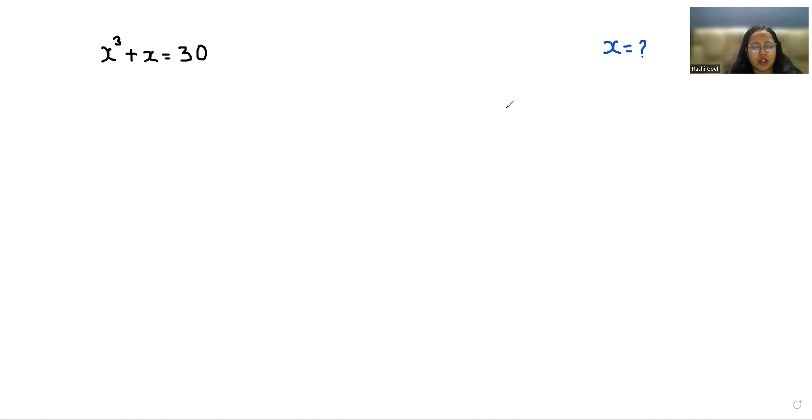Let's start with today's video solution. We can write this as x³ + x - 30 = 0 and we can split this -30 as -27 - 3. Now x³ - 27 + x - 3 = 0 if we rearrange this, and we can write 27 as 3³.